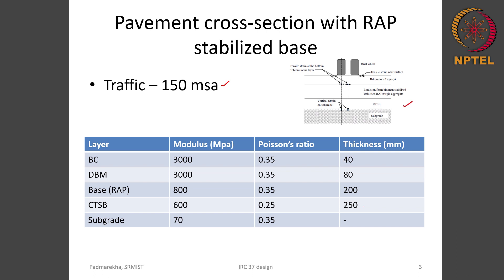This is a typical cross section. The pavement cross section may consist of 4 or 5 layers, in which 1 or 2 layers can be an HMA layer resting on a RAP stabilized base. The RAP stabilized base course is considered here as a granular layer. You need to determine the resilient modulus of the RAP stabilized base assuming it to be a granular layer, and use that as an input to determine critical stresses and strain. We will assume a trial section and find out whether it can take 150 MSA traffic.